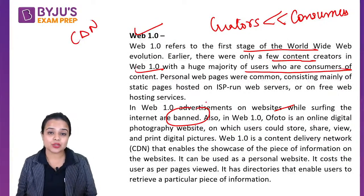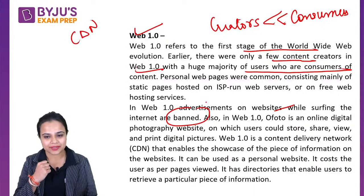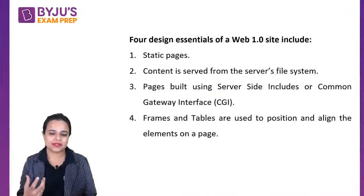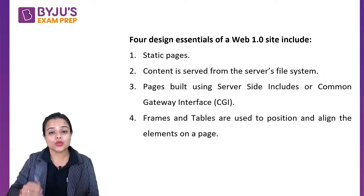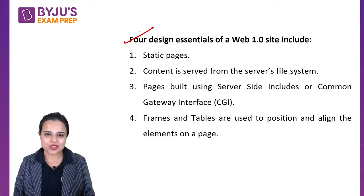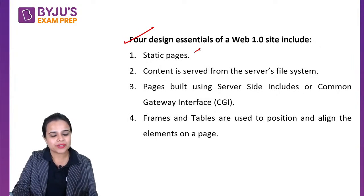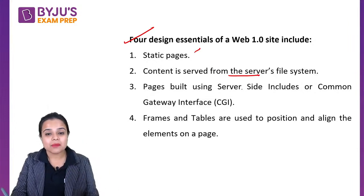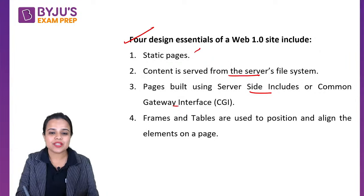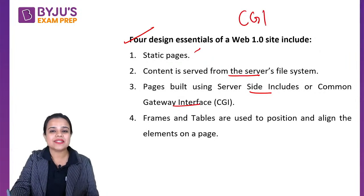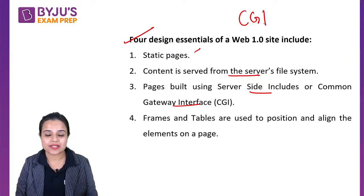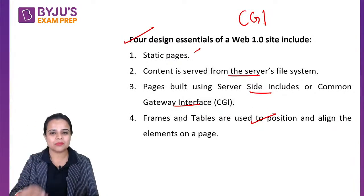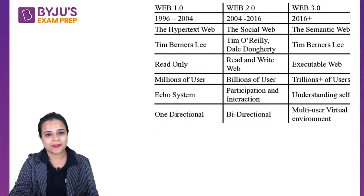Web 1.0 was more like a content delivery network — a network through which we primarily delivered content so that interested users could receive a particular piece of information. The design essentials of Web 1.0 included static pages, content served from the server's file system, pages built using server-side technologies, largely CGI (Common Gateway Interface), and frames and tables used for alignment and design.